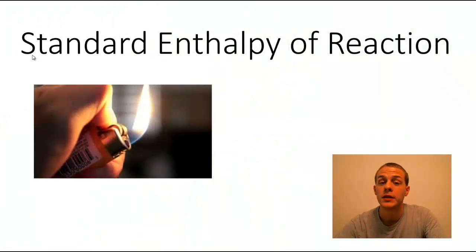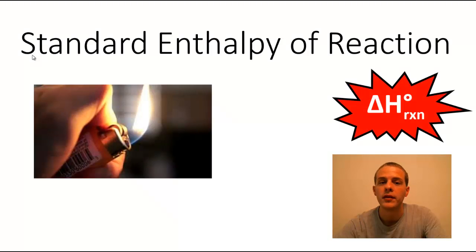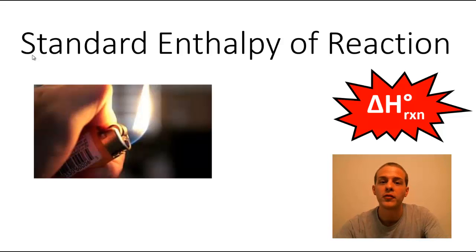Hey, what is up everybody? So today we're going to talk about standard enthalpy of reaction. We're going to talk about what it is and how to calculate it. Standard enthalpy of reaction has this symbol: delta H with a degree sign as a superscript and Rxn, that stands for reaction, as a subscript. Essentially, standard enthalpy of reaction is the enthalpy change — the amount of heat that is given off or absorbed by a chemical reaction under standard conditions.